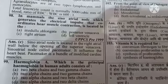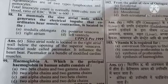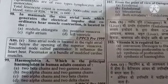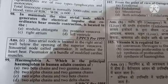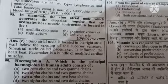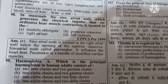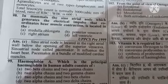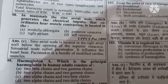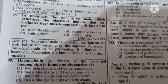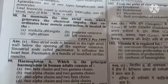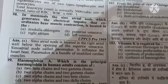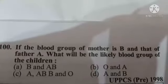Next question: hemoglobin A, which is the principal hemoglobin in human adults, consists of — Option A: 2 beta chains and 2 gamma chains, Option B: 2 alpha chains and 2 gamma chains, Option C: 2 alpha chains and 2 beta chains. The correct answer is Option C: 2 alpha chains and 2 beta chains.